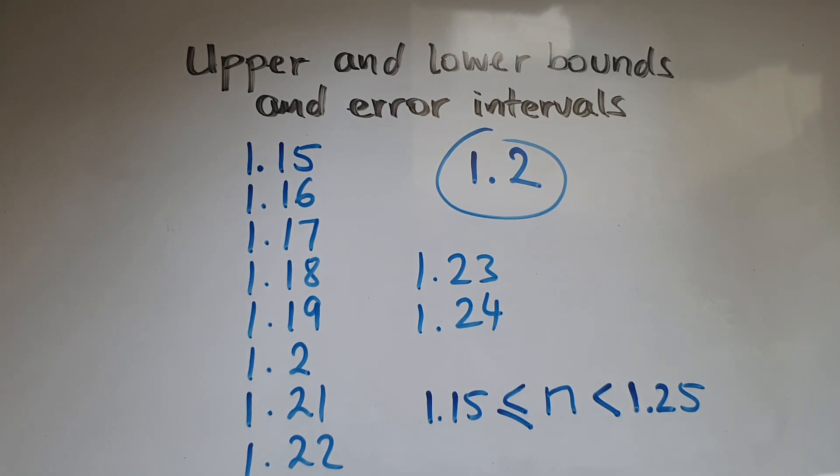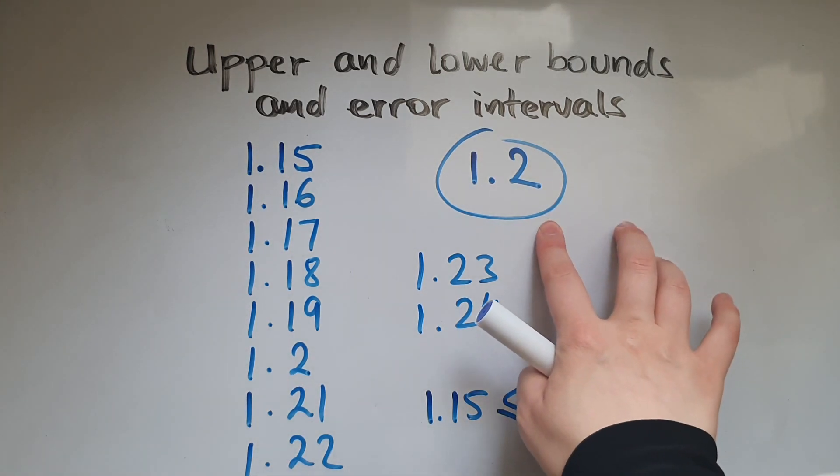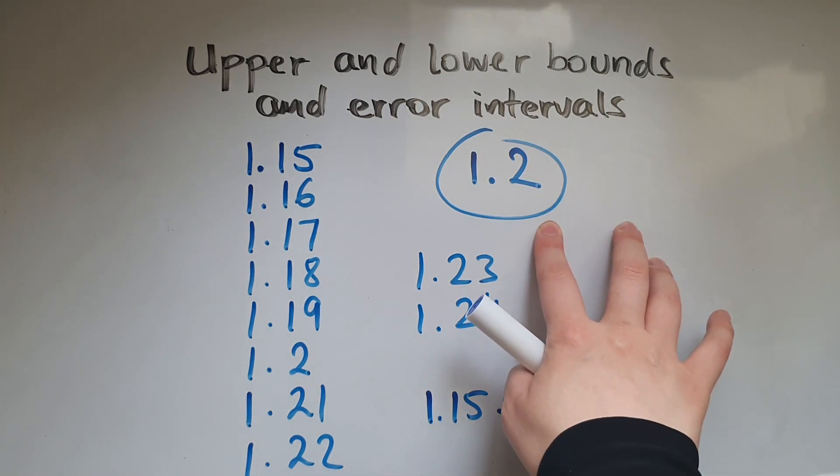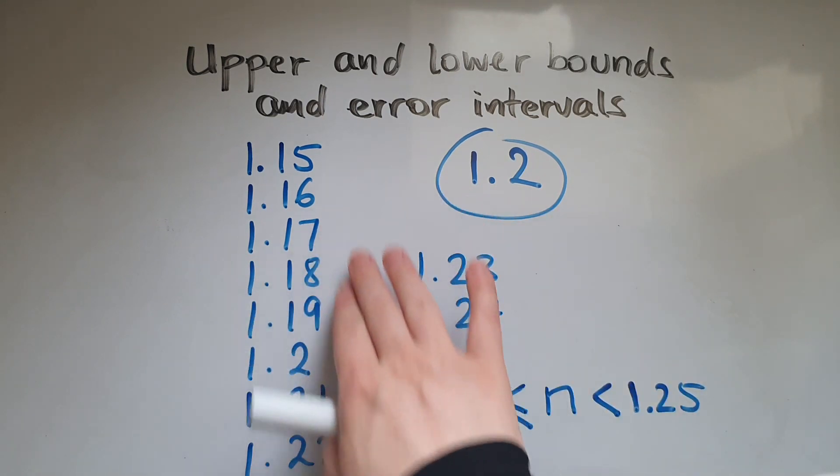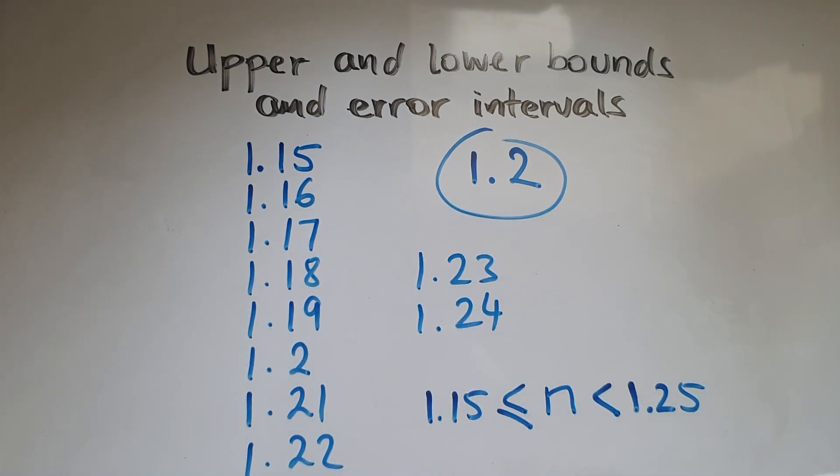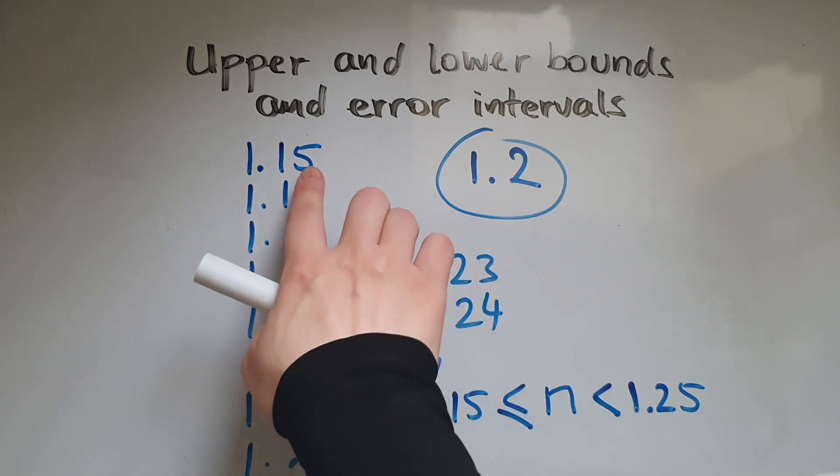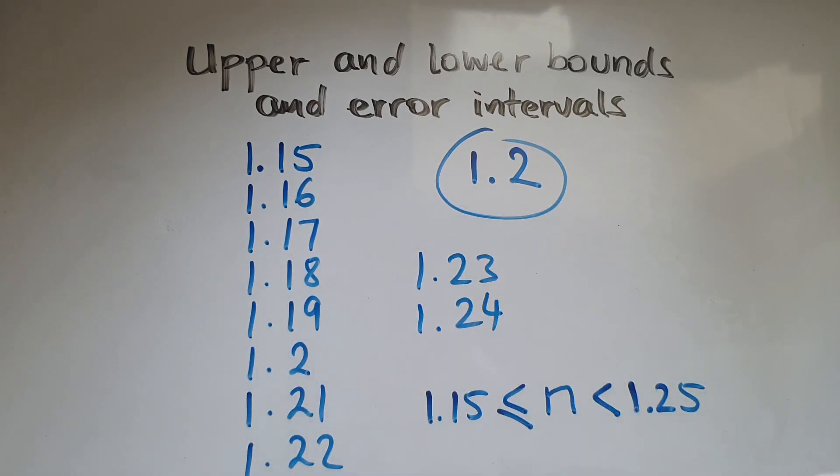What do you notice? When we round the number to one decimal place, the range of values that we're going to have, the lower bound as well as the upper bound, will have two decimal places. So one more than the number we're looking at.